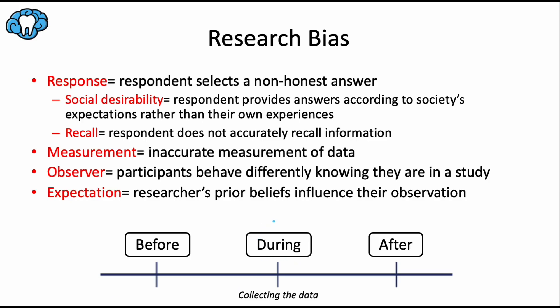Next, let's talk about research bias that comes into play during the study itself — that would be during the data collection phase. Response bias is when a person selects an answer to a question that is not honest — intentionally or unintentionally incorrect. Social desirability bias is the most common type of response bias, occurring when survey respondents provide answers according to society's expectations rather than their own beliefs or experiences. This could be something personal like HIV status — the subject knowingly choosing a different answer because they are uncomfortable recording the honest answer.